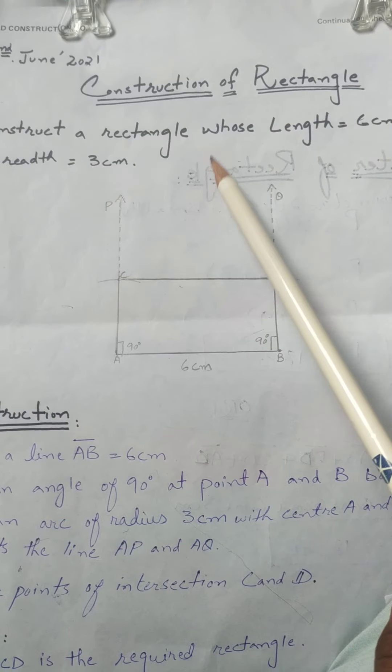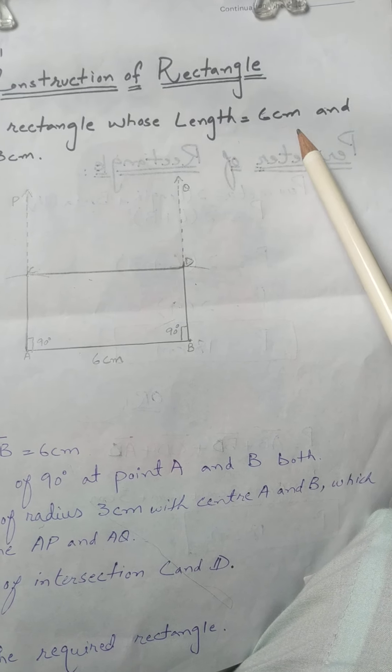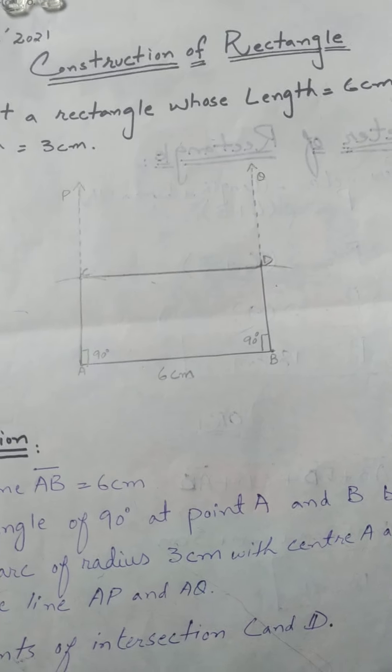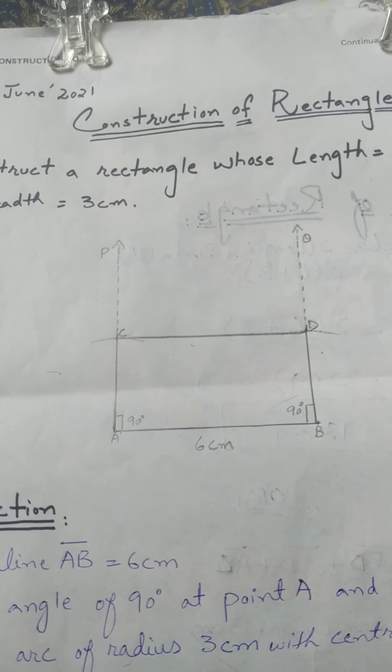The question is: construct a rectangle whose length is 6 cm and breadth is 3 cm.